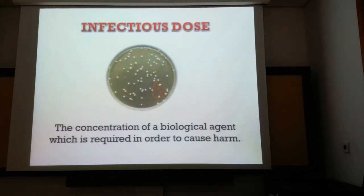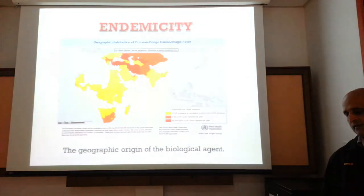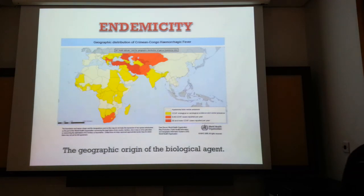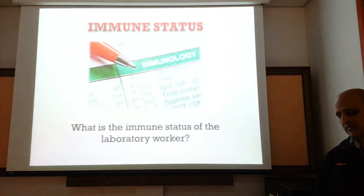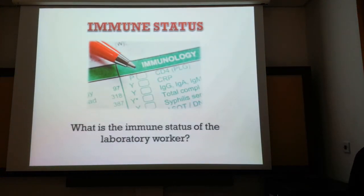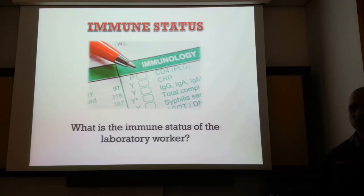The next question is infectious dose — how much of the biological agent is required to cause morbidity or mortality? The next aspect is endemicity: is the biological agent endemic to the specific region? If so, individuals endemic to that region may have developed some level of immunity. We also need to look at the immune status of the laboratory worker — if they are immunocompromised, we need measures to mitigate the risk posed to them.